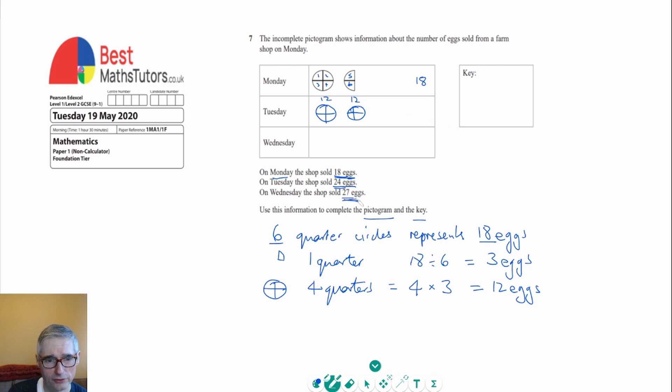On the Wednesday it says the shop sold 27 eggs. So we're going to start off by showing two of these full circles because we know that's 24, and then we need three more. So that's just going to be another quarter. So I would represent it like that. I suppose it could be either way around, so we could represent it in that or that. Either way would do.